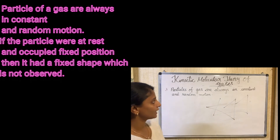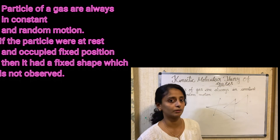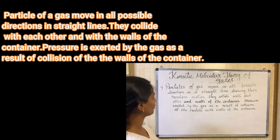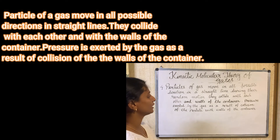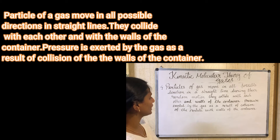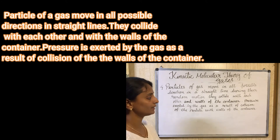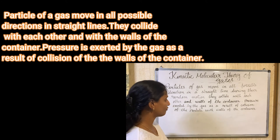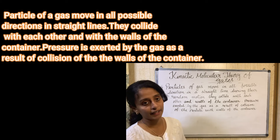The third postulate states that particles of gas are always in constant and random motion. The fourth postulate states that particles of gas move in all possible directions in a straight line during random motion. They collide with each other and with the walls of the container. The pressure exerted by the gas is a result of the collision of particles with the walls of the container.